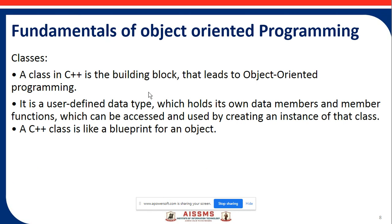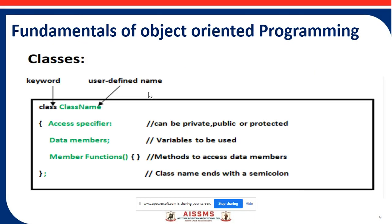The next fundamental is classes. A class in C++ is the building block that leads to object-oriented programming. It is a user-defined data type which holds its own data members and member functions, which can be accessed and used by creating an instance of the class. A C++ class is like a blueprint for an object.